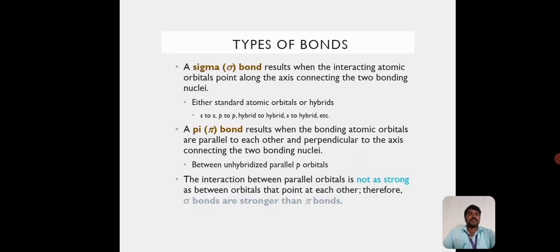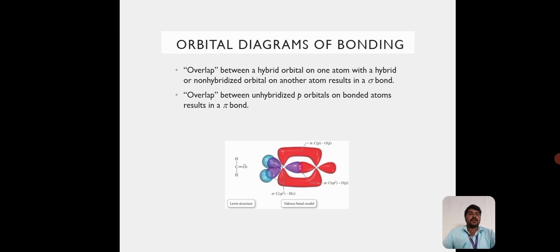Types of bonds: There are two types of bonds present. One is the sigma bond and another one is the pi bond. Overlap between a hybrid orbital of one atom with a hybrid or non-hybridized orbital on another atom results in a sigma bond. Overlap between unhybridized p orbitals on bonded atoms results in a pi bond.